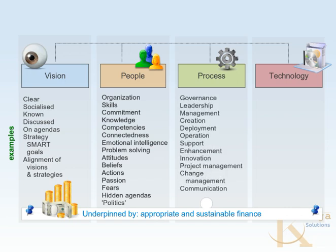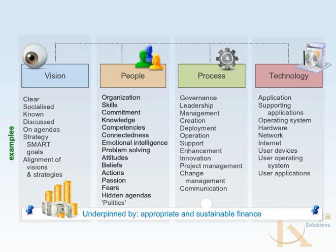What about the process basket? Governance is clearly an important process. Leadership and management matter too. Then there are processes related to technology: creation, deployment, operation, support, and enhancement. Broader perspective processes include innovation, project management, change management, and communication. The degree to which an organization puts effort into all of these is a significant determinant of ICT initiative success. Then the technology itself: applications, supporting applications, operating systems, hardware, networks, internet, user devices, user operating systems, user applications — all of these come into play in determining whether technology lives up to expectations. These things all need to be aligned for successful ICT implementation.